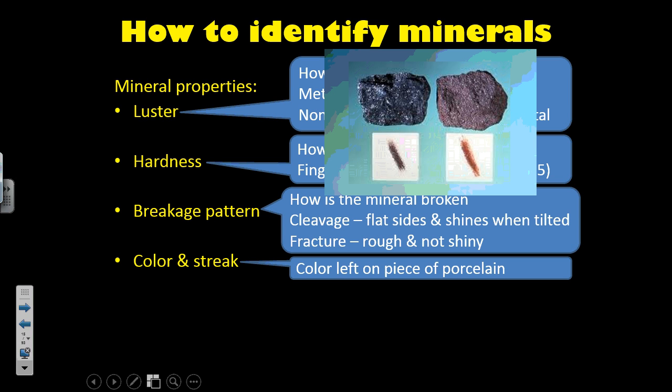Next are color and streak. Color is a difficult one to use when identifying minerals because some minerals can be multiple colors. Fluorite, for example, can be blue, green, clear, or purple — so that's tough. But we can also test streak. Streak is just taking a mineral, rubbing it on a piece of porcelain, and seeing what color is left behind — the ground-up mineral material. That is a mineral streak.